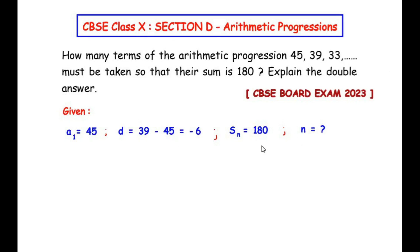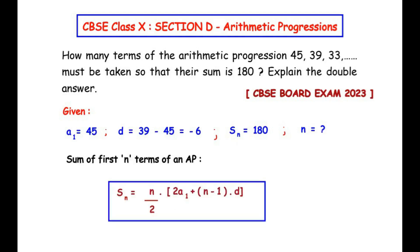Since the sum is mentioned in the question, we are going to make use of the sum of n terms of an AP formula. The sum of the first n terms of an AP is given by: Sn = n/2 × [2a1 + (n−1)d], where n is the number of terms, a1 is the first term, and d is the common difference.